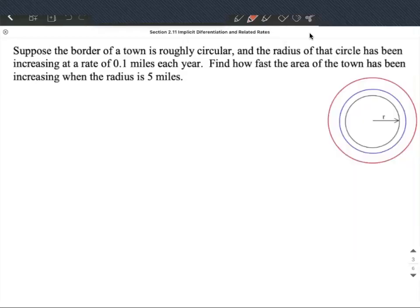Okay, a related rates problem. So in this one, we have a border of a town is roughly circular, and the radius of the circle has been increasing at a rate of 0.1 miles each year.